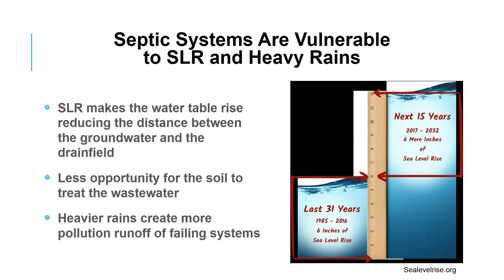In addition, septic tanks are vulnerable to sea level rise. As we talked about during our first session on resiliency, sea level rise as well as increasing rainfall is making the issues that we've all been working on together for decades even more dire, requiring immediate action. With sea level rise, you'd have a water table that rises, and so the distance between the septic tank drain field area and groundwater is much less. You don't have the filtration that currently exists — there's less opportunity for the soil to treat the wastewater. And heavier rains make it more vulnerable to runoff and failing systems impacting our groundwater and surface water.